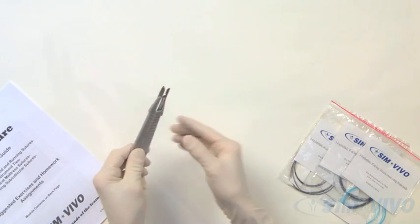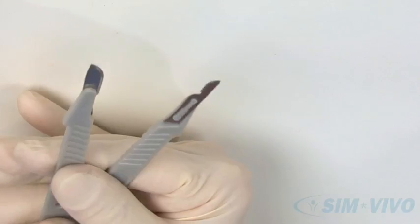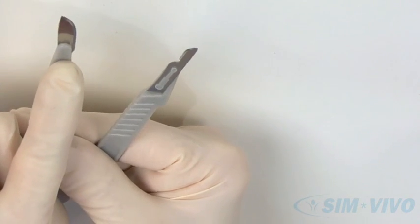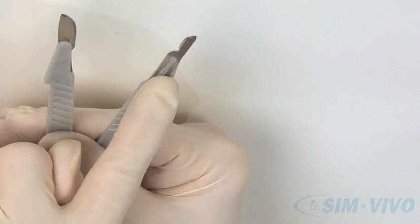These are scalpels for cutting the simulated skin. The larger blade is called a number 10 blade, and the smaller blade is called a number 15 blade.